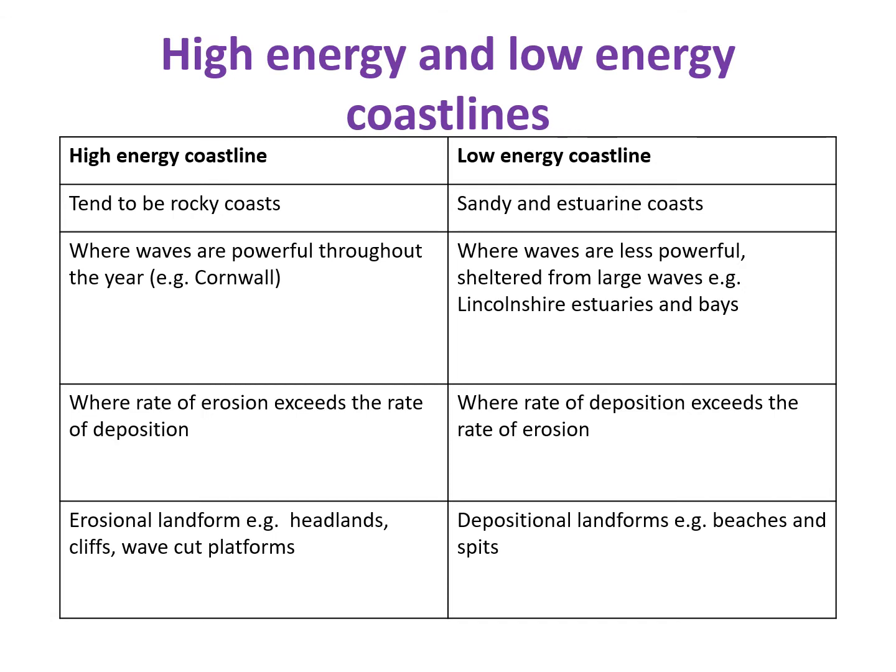Finally, high energy and low energy coastlines. On a high energy coastline, we have powerful waves throughout the year — southwest England and Cornwall are good examples, due to that long fetch across the Atlantic Ocean. On these coastlines, the rate of erosion exceeds the rate of deposition, so we predominantly see erosional landforms such as headlands, cliffs, and wave cut platforms.